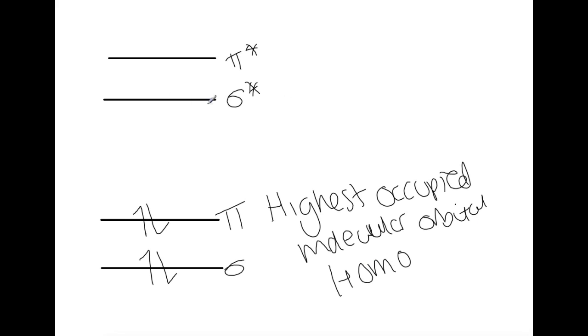This orbital here, the next one up from the HOMO, is the lowest unoccupied molecular orbital. So here we have the highest occupied molecular orbital. This one is the lowest unoccupied molecular orbital, and that gets shortened to LUMO.